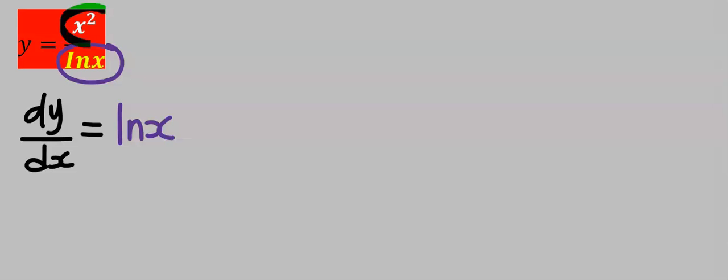Next, differentiate the numerator, which is 2x. Next, you put a minus. Next, you keep the numerator constant, which is x squared.